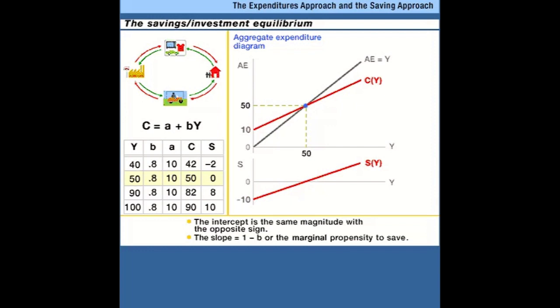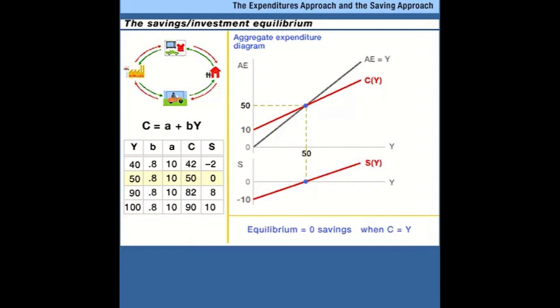The savings function has an intercept right here. Savings equals zero when income equals 50. When income is 50, people are planning to spend all of their income on consumer goods and services, leaving savings equal to zero. If there's nowhere for savings to go — if businesses don't want to borrow it, the government doesn't want to borrow it, if there's no one else in the model who might use savings — then in equilibrium savings has to be zero. Consumers have to be spending all of the income they get; otherwise stuff is piling up on shelves or businesses are drawing down inventories.